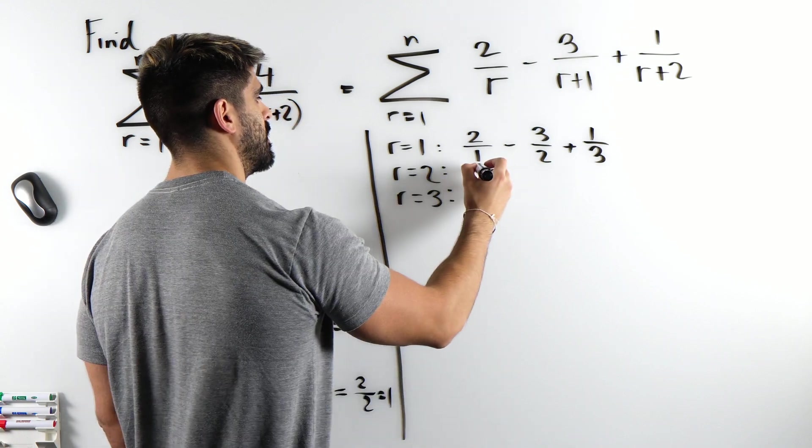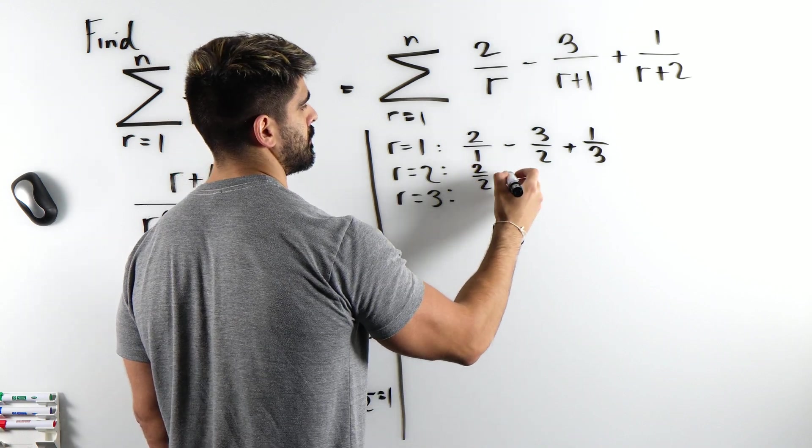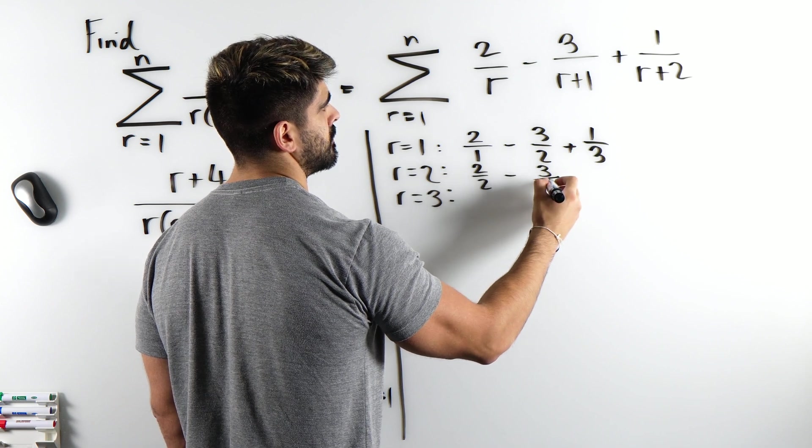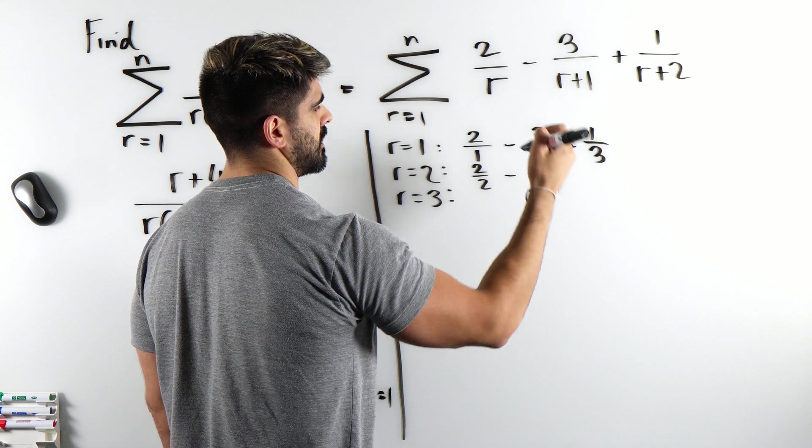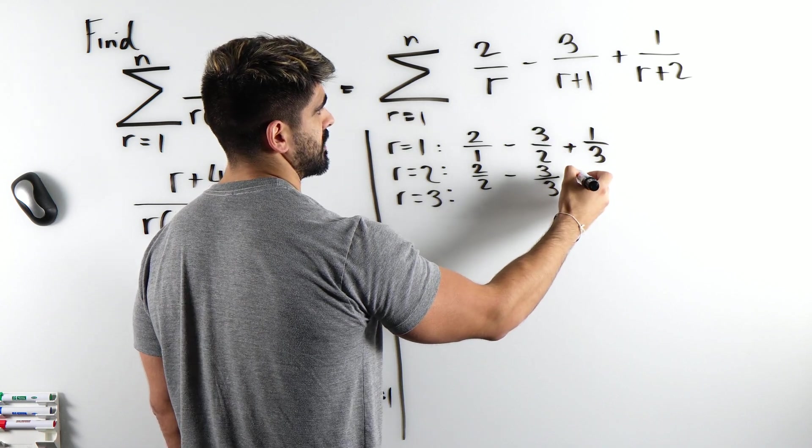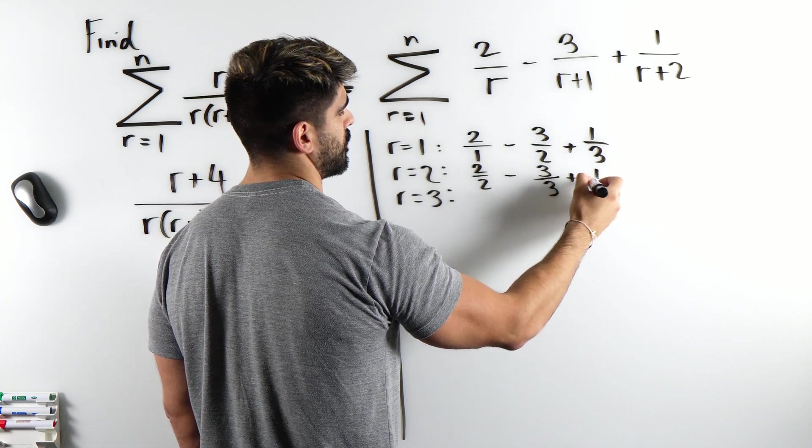Now when r is 2, we get 2 over 2 minus 3 over 3, which is interesting, plus 1 over 4.